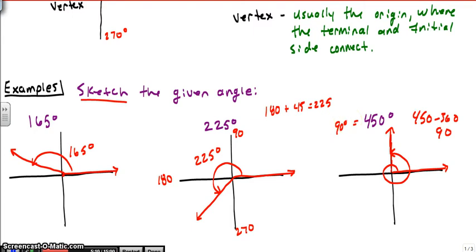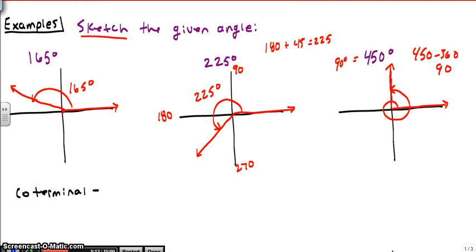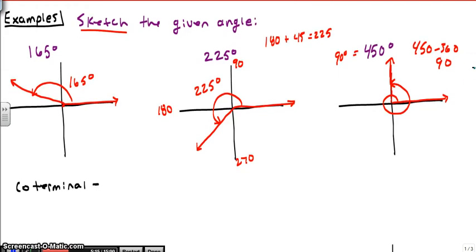And when we have two angles that are the same, we call those coterminal, because they share the same terminal side. Of course they share the same initial side, because all these angles share the same initial side. But when we look at coterminal angles, we're talking about angles that share the terminal side. That's what we're looking at.